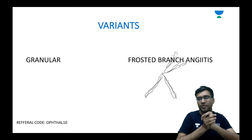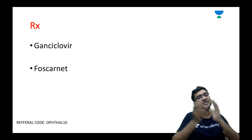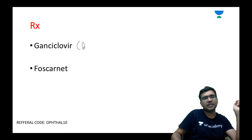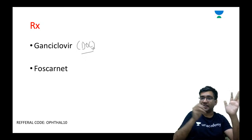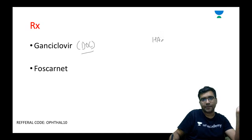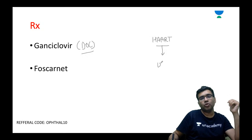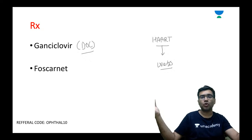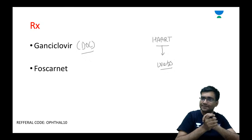We need to treat these patients. The two important medications for CMV retinitis are ganciclovir and foscarnet. If you want to remember only one, ganciclovir is the drug of choice. CMV infection is more commonly seen in immunocompromised HIV positive individuals already on HAART therapy. Sometimes you see uveitis developing in these patients — this is called immune reconstitution uveitis, occurring because of immune reconstitution from HAART therapy, not active infection.